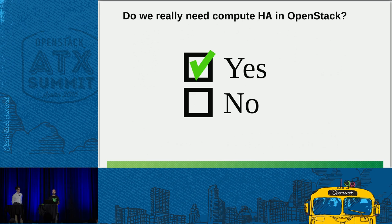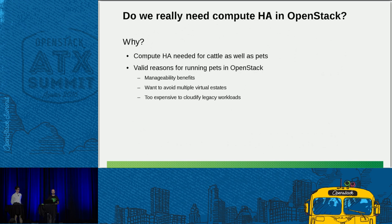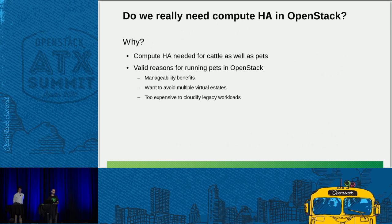In conclusion, our opinion is that yes, there are really good reasons for doing compute HA. Firstly, cattle need to be auto-restarted in some way. Secondly, there are really valid reasons for running pets in OpenStack even though a lot of people don't like the idea. The typical response is to say you should migrate all your pets into cattle workloads, but in the real world that's a lot of effort and you can't do it overnight. It's best to have some solution while you still have pets, especially if you want to consolidate all your workloads into one cloud rather than having a VMware estate for all your pets and a separate OpenStack estate for cattle.